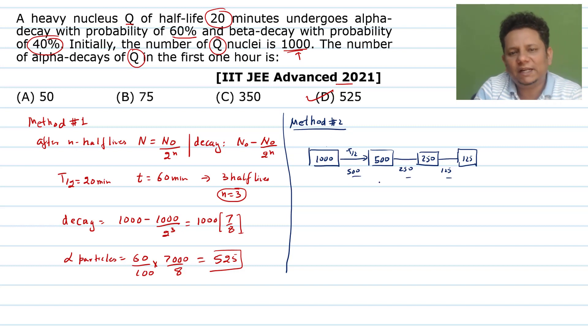You can also directly subtract 125 from thousand for total decay. So what decayed - the remaining is 125. What decayed, again this method is when the number of cycles is around 3 or 4 half-cycles. Beyond that, this method becomes difficult. So how many decayed? You'll get 500 plus 250 plus 125. When you calculate this, it becomes 875.